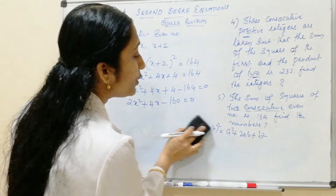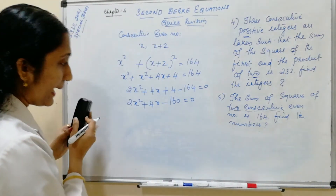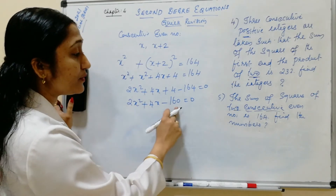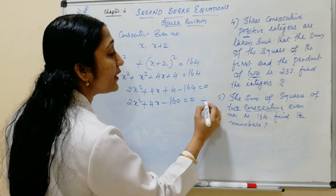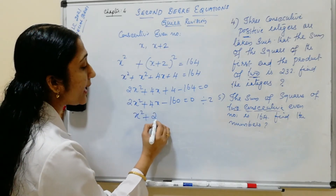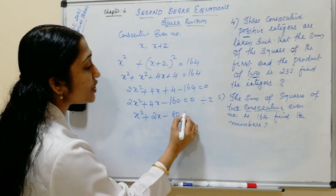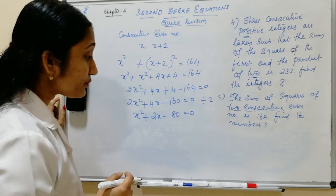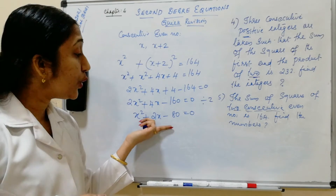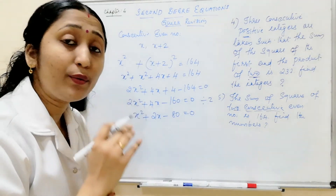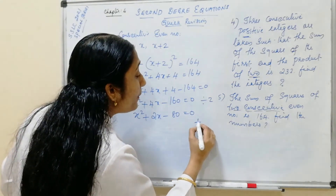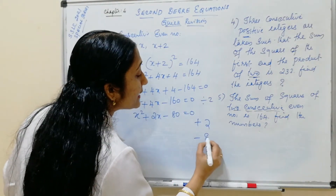Dividing the entire equation by 2: x squared plus 2x minus 80 equals 0. Now we find the solution for x.